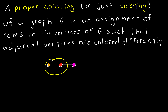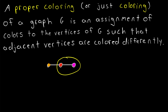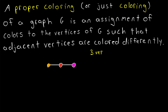These two vertices are adjacent — this one's orange, this one is red. These two vertices are adjacent — this one's red, and this one is purple. So we've colored this graph, which has three vertices, with three colors.